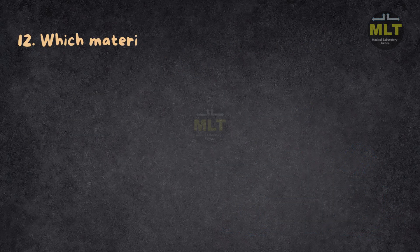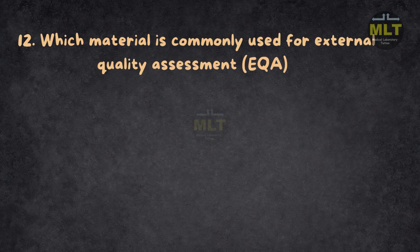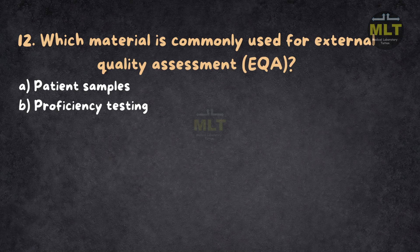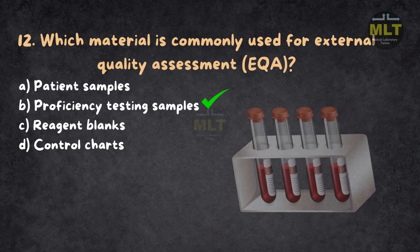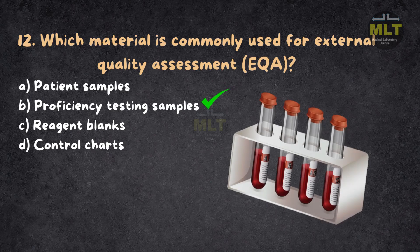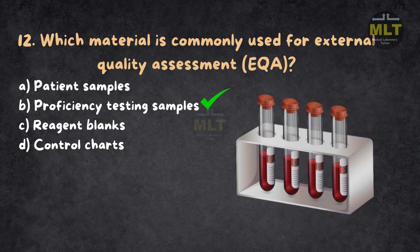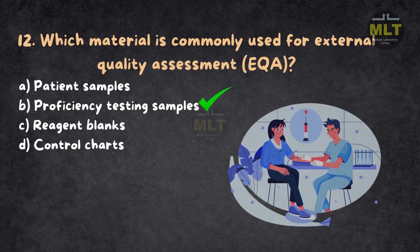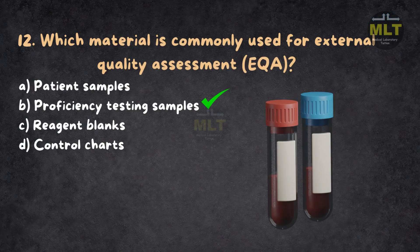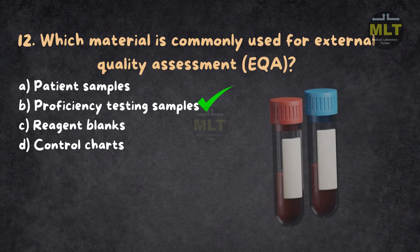Question 12: Which material is commonly used for external quality assessment (EQA)? a. Patient samples. b. Proficiency testing samples. c. Reagent blanks. d. Control charts. Correct answer: b. Proficiency testing samples. Proficiency testing samples with known reference values are used in EQA to compare lab performance externally. These materials help assess accuracy and consistency across different laboratories. Patient samples or reagent blanks do not serve this purpose.